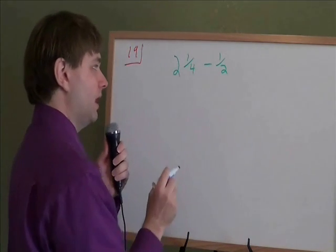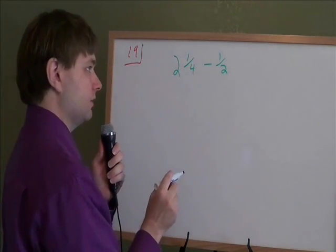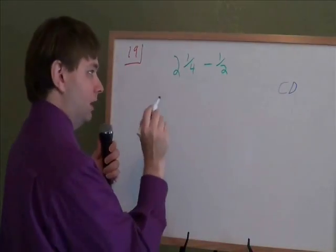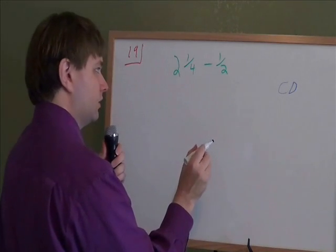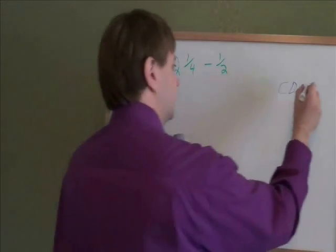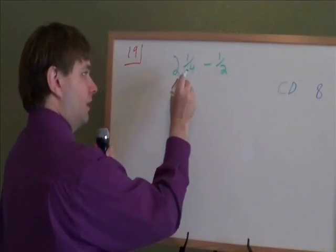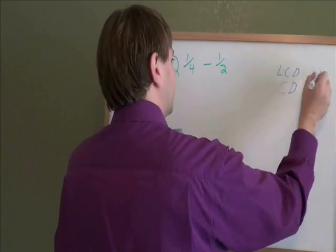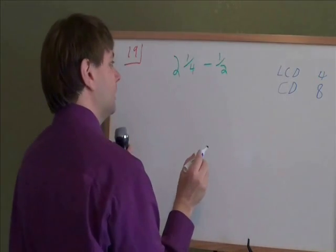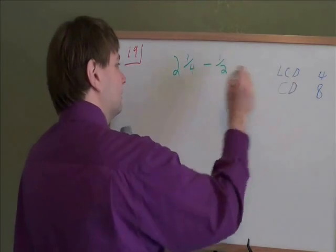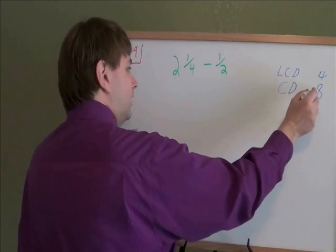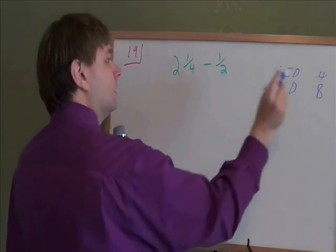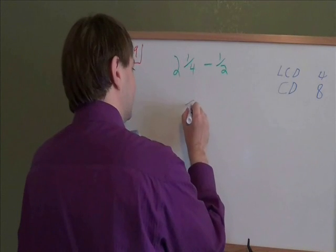2 and 1 fourth minus 1 half. We're adding or subtracting fractions, so the very first step is going to be to find a common denominator. And my really fast, easy way of doing that is just to multiply the numbers together. 4 times 2 is 8. Now, if you know a lot of math, you can actually make this a little bit faster by finding the LCD, which ends up being 4. That's the lowest possible common denominator. But if you're having trouble with fractions, just multiply them to get a common denominator. As long as they're the same denominator, it doesn't matter if it's big or small, you'll still get the right answer eventually. So, I'm going to use 8 as my common denominator.